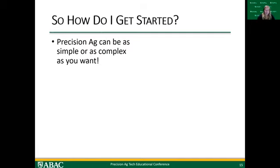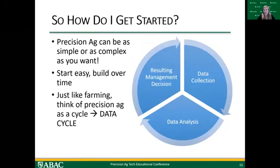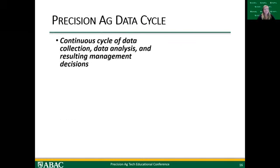My recommendation, especially if you haven't entered the whole realm of Precision Ag, is to start really easy and simple — get your feet wet and then start building over time, introducing new things and new technologies as you feel comfortable. Think of Precision Ag as a data cycle. It's a continuous cycle of data collection, data analysis, and the resulting management decision. We go out, collect data, make actionable information from that data, figure out what's causing variability in my field, make a management decision, implement it, and then start all over again.